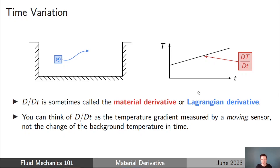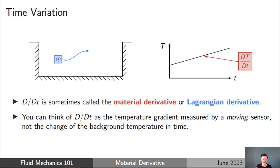It's called the Lagrangian derivative because we're moving with the object — we're not in a fixed reference frame outside the object. This derivation is actually very useful because we can use it to derive the Navier-Stokes equations. The most common derivation uses a fixed volume with fluid passing through it, but we can do a much quicker derivation using the material derivative. We'll then build to look at the different forms of the Navier-Stokes equations, and I'll show that all forms are consistent.